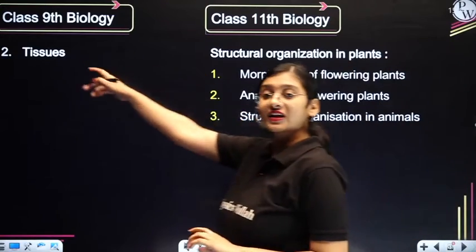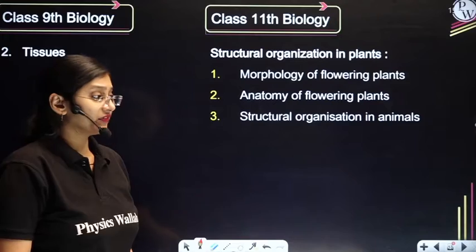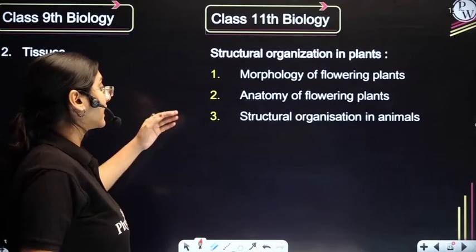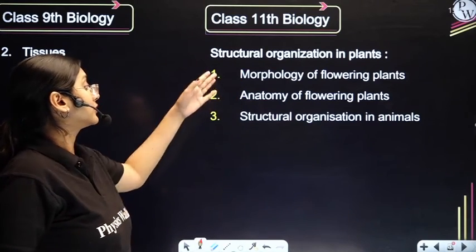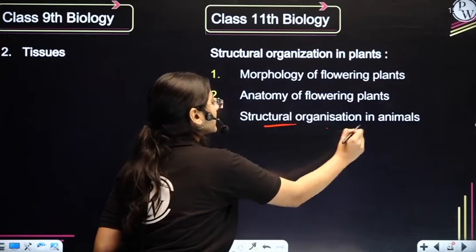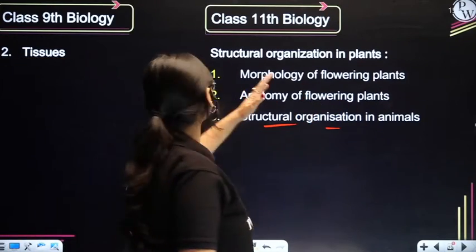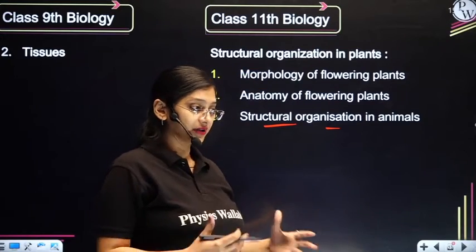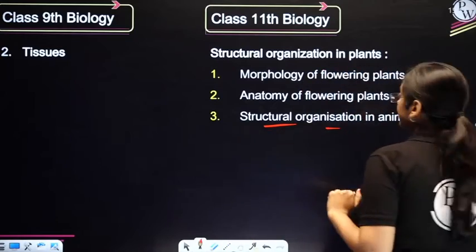The Tissues chapter of class 9th biology connects to plant tissues and animal tissues, which are covered in the 11th standard in Anatomy of Flowering Plants, Structural Organisation in Plants — where we study animal tissues — and Morphology of Flowering Plants, which is also important. Having studied Tissues in 9th helps you better understand these 11th standard chapters.